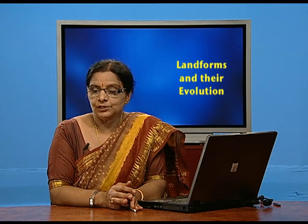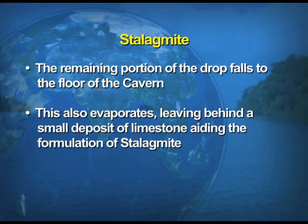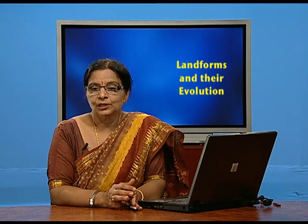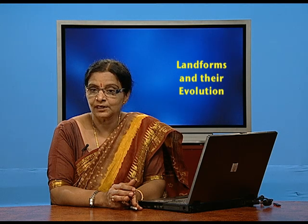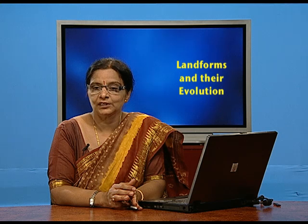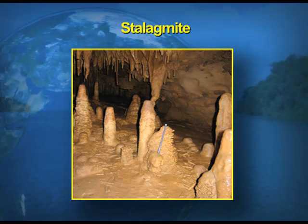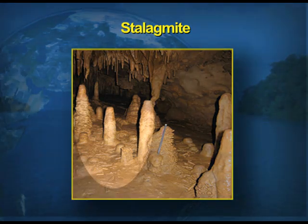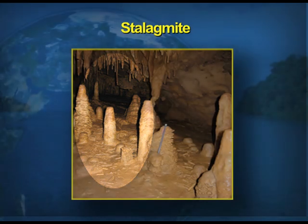The next depositional feature is the stalagmite. The remaining portion of the drop falls to the floor of the cave, evaporates, and leaves behind a small deposit of limestone, aiding the formation of the stalagmite. Since stalagmites are formed from the bottom upwards — from the floor of the cave towards the roof — the stalagmites are thicker and flatter, rising upward from the floor. On the screens, you can see a visual of the stalagmite showing how the formation rises upwards from the floor towards the roof of the cave.